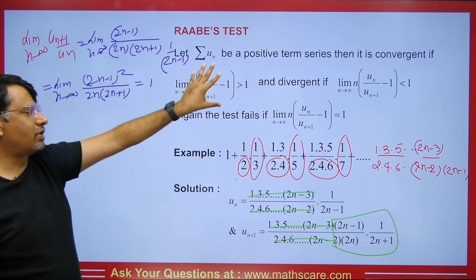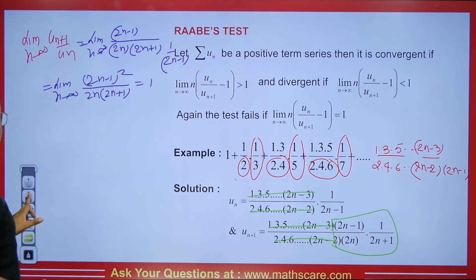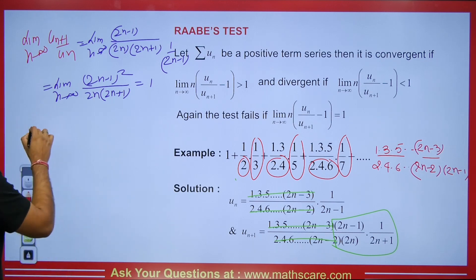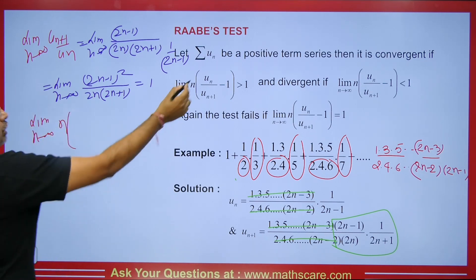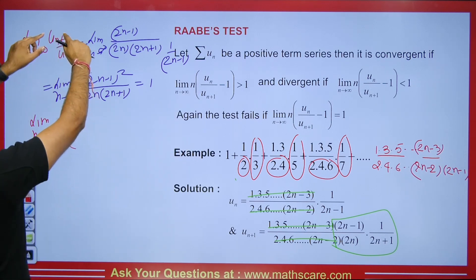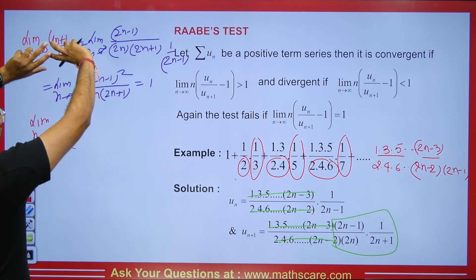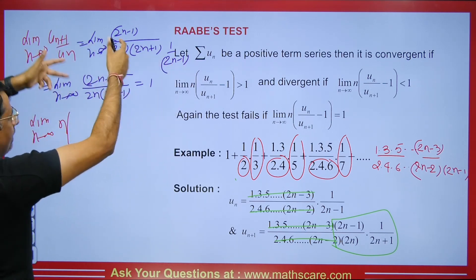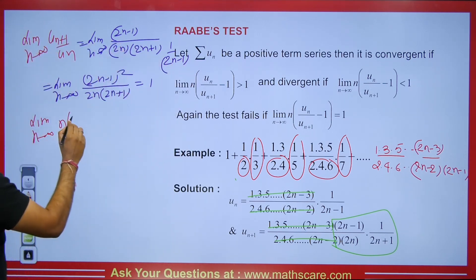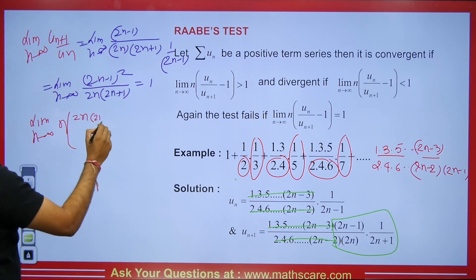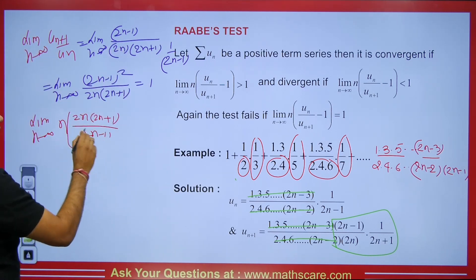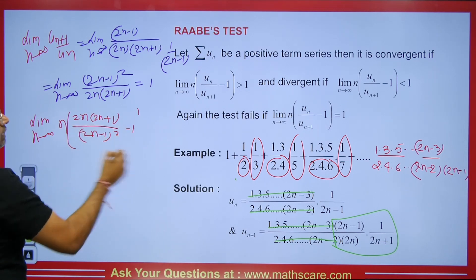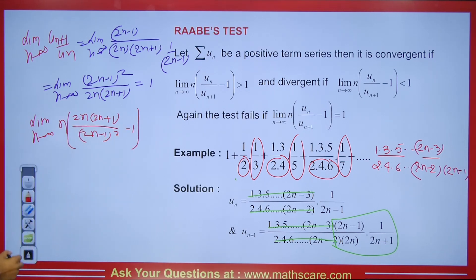Raabe's Test gives us the limit as n tends to infinity of n(u_n / u_{n+1} − 1). We take the inverse of u_{n+1}/u_n: so in the numerator we have 2n(2n + 1) and in the denominator we have (2n − 1)² minus 1. Now let's multiply and simplify.